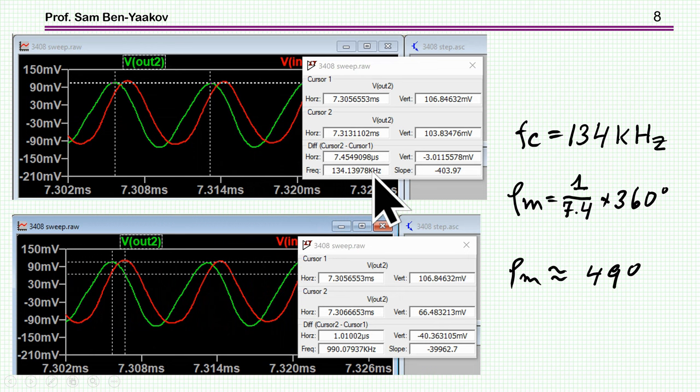And it turns out that the frequency is 134 kilohertz. And also, look at the phase shift between these two, which is actually, in this case, the phase margin. And you see that the phase margin, in this case, is 49 degrees. Pretty good. It's about 50 degrees. And this is a very nice, solid design. And the bandwidth is really very impressive.